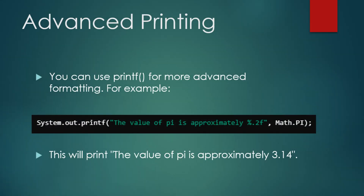If you want more control over the format of your output, Java provides the printf method. This method allows you to print formatted strings. For example, if you want to print the value of pi rounded to two decimal places, you can do it like this: System.out.printf("The value of pi is approximately %.2f", Math.PI). This prints: The value of pi is approximately 3.14. The %.2f tells Java to format the floating point number to two decimal places. This is just one example of how printf gives you precise control over how your output is displayed.